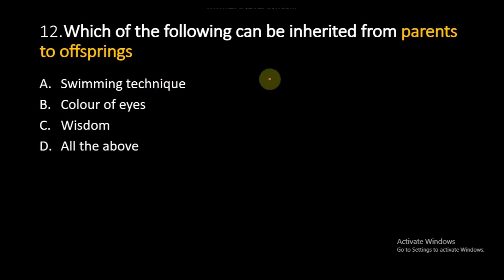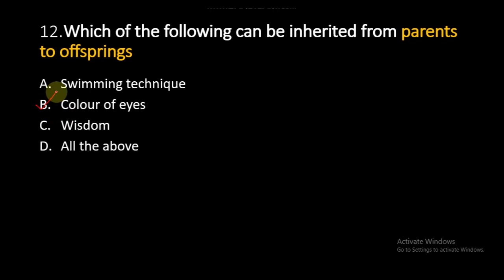The color of the eyes is inherited from parent to offspring, so that option is correct. Wisdom is also an acquired character, so that is not the right answer. All of the above is also wrong. So option B is the right answer.